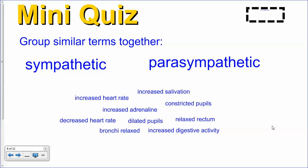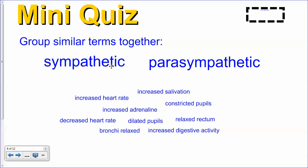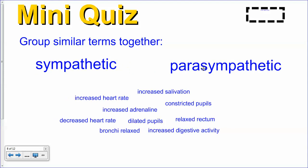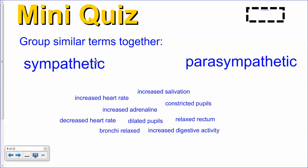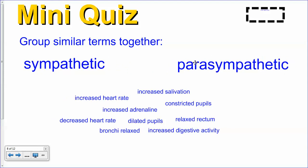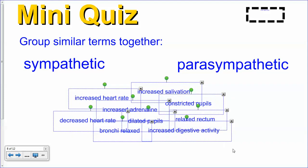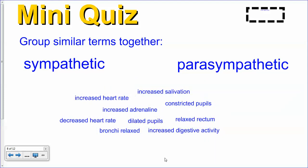Continuing on with the human brain section, we just finished in the last video talking about the difference between the sympathetic and parasympathetic system. Do you remember which one is involved in fight or flight? Can you match these up? Pause the video and give that a go.